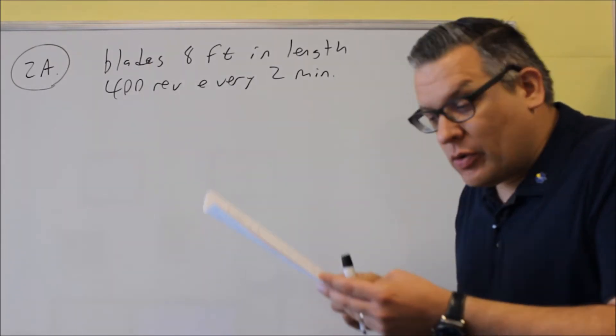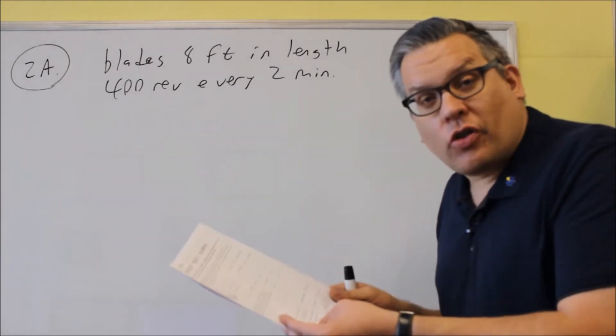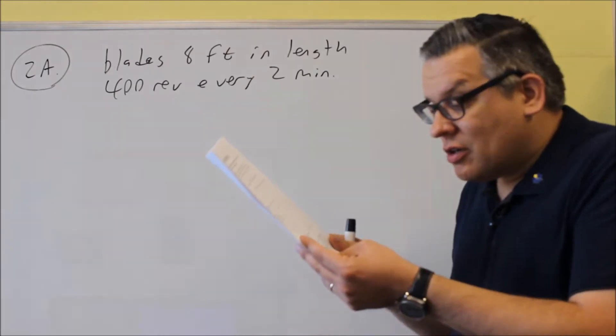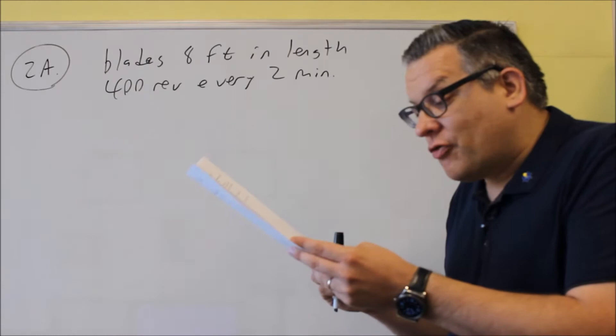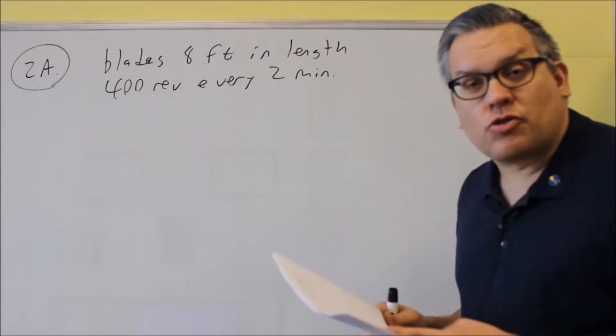First thing it wants is angular speed and we have to take special note of the units that they want this in. They want it in radians per second and the linear speed in feet per second. It says write your answers in terms of pi.